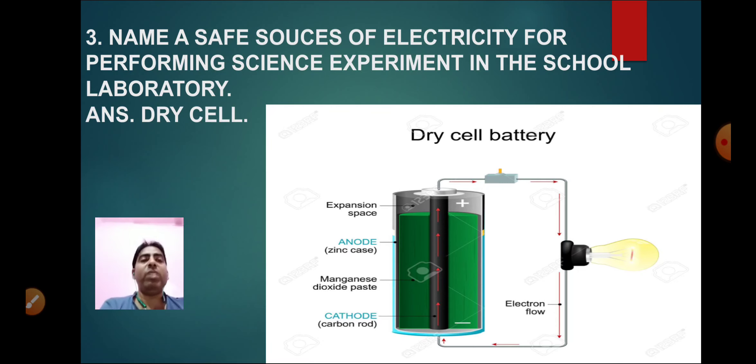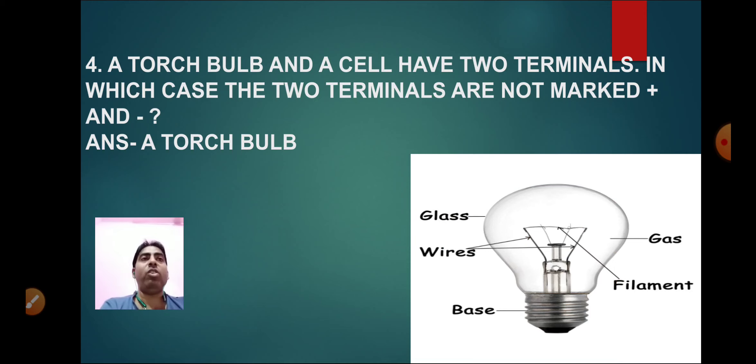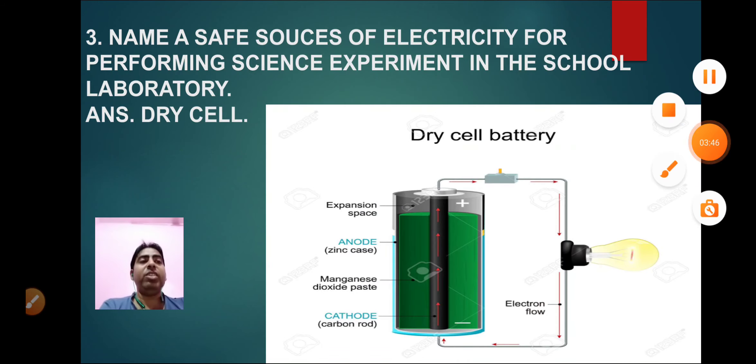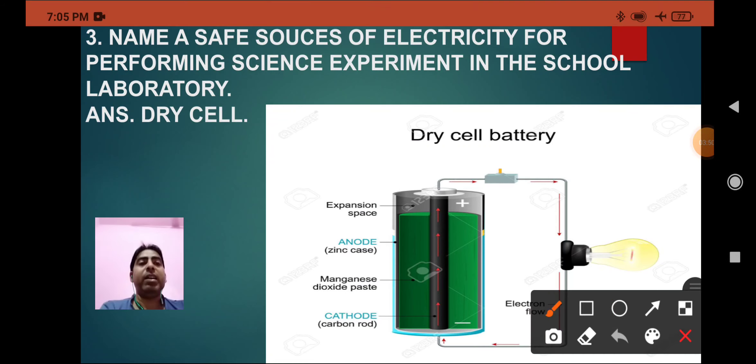Moving toward the next question, the fourth one: A torch bulb and a cell have two terminals. In which case the two terminals are not marked with positive and negative? Just now you have seen that the dry cell, I am talking about the cell, has two terminals.